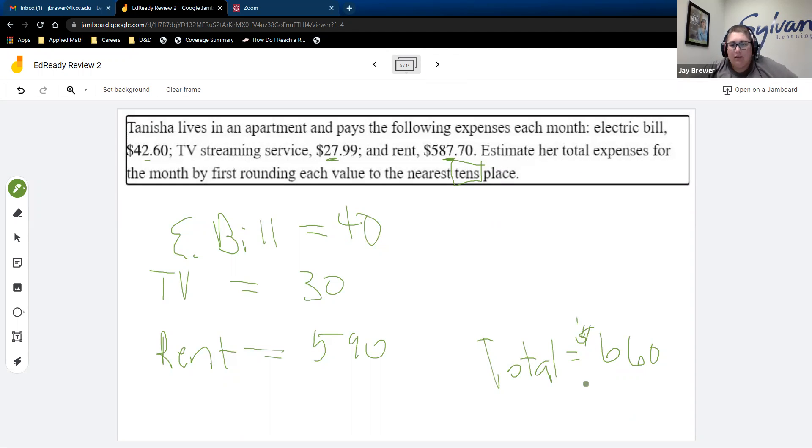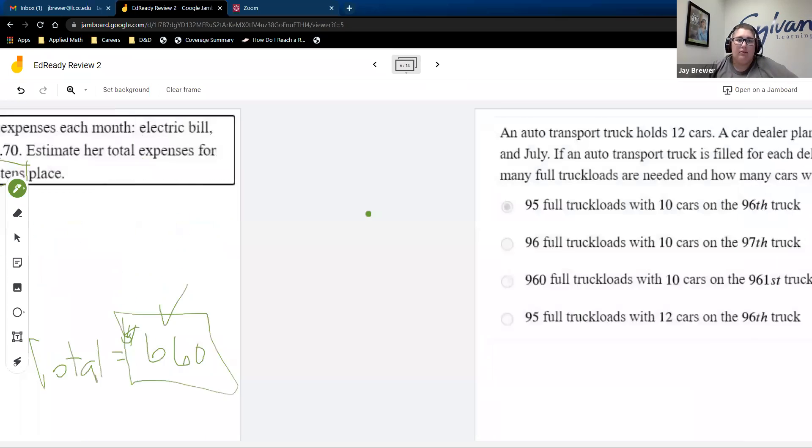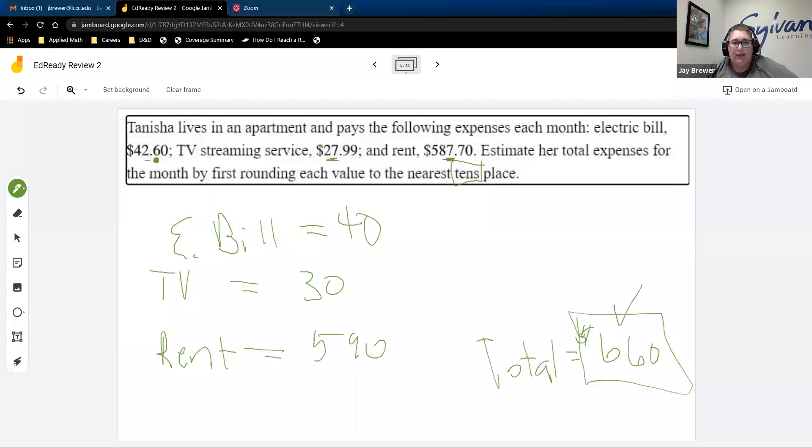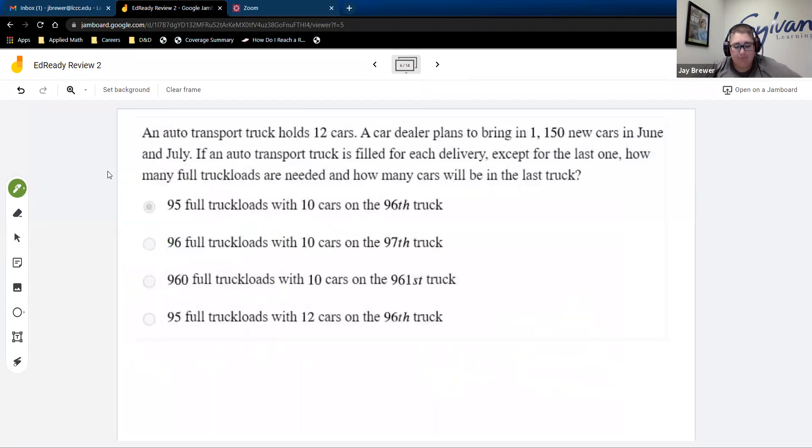And then for our total, we just want to add all three of those together. So you should get 660. I will warn everybody that estimating is definitely something that a lot of students struggle with. Sometimes they look at the wrong placement. So here it's very easy that you could round to the ones instead of the tens. You could round one to tens, one to ones and one to hundreds. So just pay attention. And if you take your time, you should be good to go.